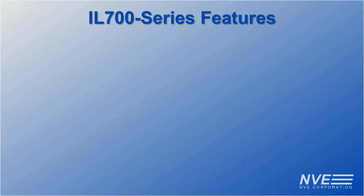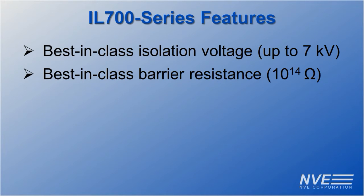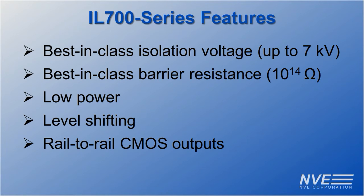Important features for analog isolation include best-in-class isolation voltage and the world's highest barrier resistance, low power, level shifting, and rail-to-rail CMOS outputs.